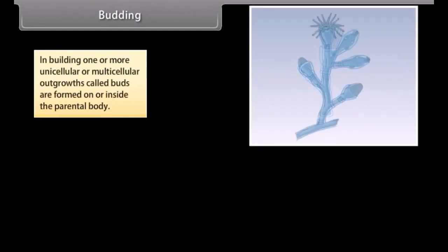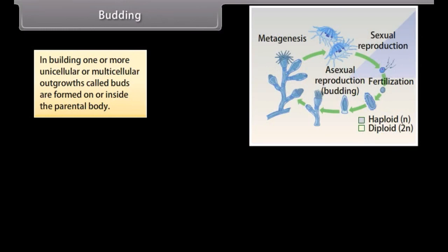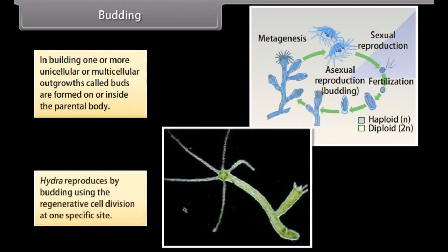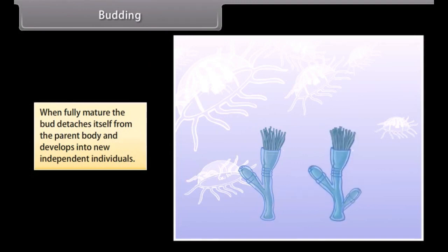Budding. In budding, one or more unicellular or multicellular outgrowths called buds are formed on or inside the parental body. Hydra reproduces by budding using regenerative cell division at one specific site. When fully mature, the bud detaches itself from the parent body and develops into a new independent individual.